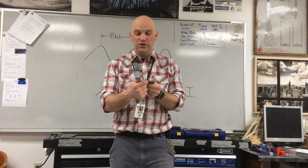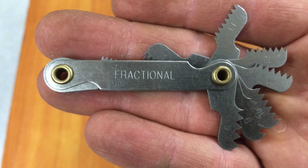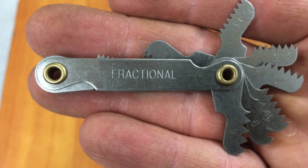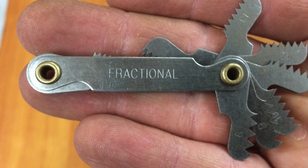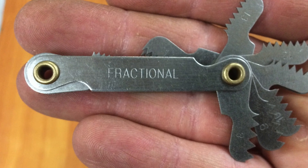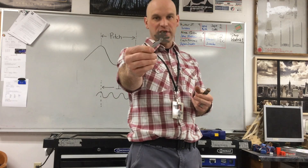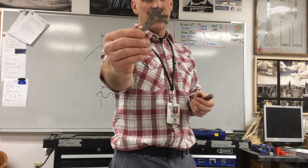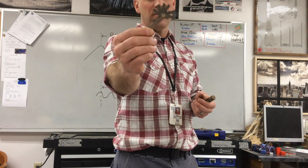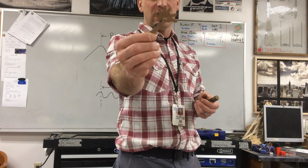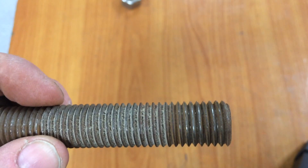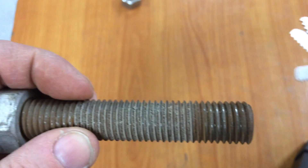A thread gauge is a fractional thread gauge that has different little gauges with different numbers of teeth to fit the threads per inch. So we have our bolt here and we're going to line up these teeth to see if they fit in there.